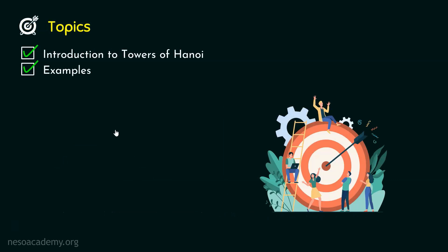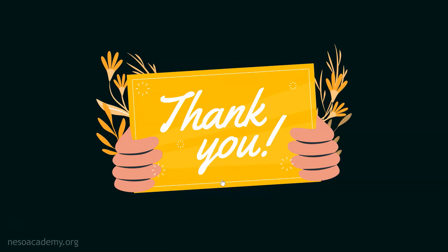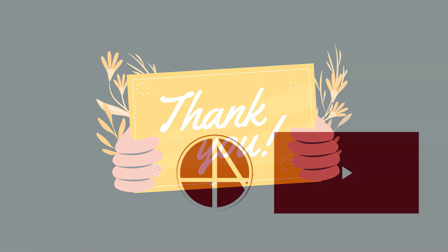We are done with all the examples of Towers of Hanoi. In the subsequent lectures, we will learn how to solve this problem mathematically using the substitution method — first by writing the recurrence relation of disc moves, then by solving it. I hope it is clear how Towers of Hanoi works. Thank you so much for watching this lecture; I will see you in the next one.